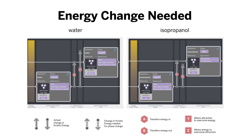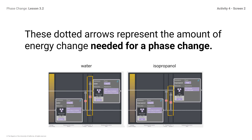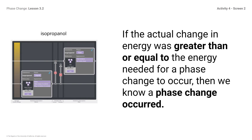We will look at each in further detail. The solid arrows show the actual movement of energy transferred into both substances. The solid arrows are the same length for both substances because the same amount of energy was transferred into both. The dotted arrows represent the amount of energy change needed for a phase change — this is a new feature you will use in future modeling tool activities. If the actual change in energy was greater than or equal to the energy needed for a phase change to occur, then a phase change occurred. We can see this in the isopropanol example: the arrow labeled with a red A hexagon is the actual energy change, and it is longer than the dotted arrow labeled with the red Z box, indicating that the phase change occurred.